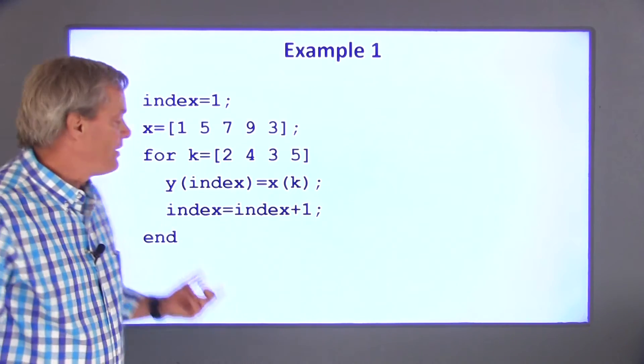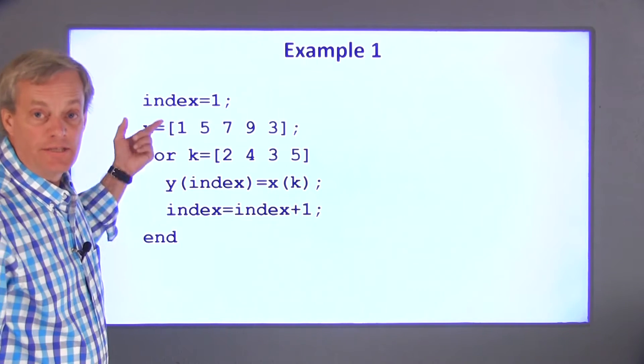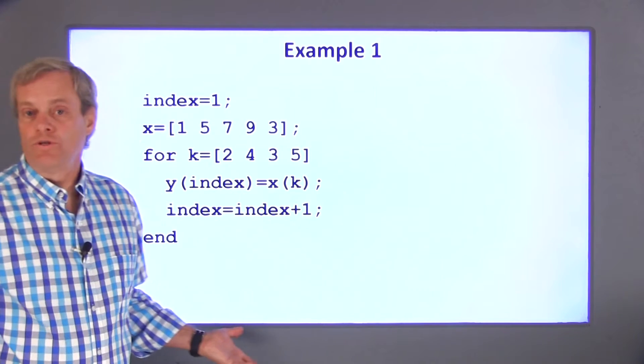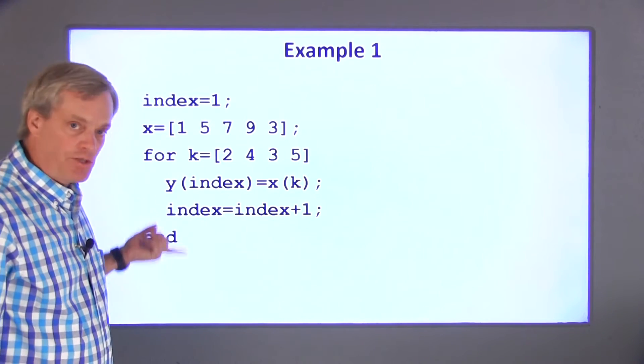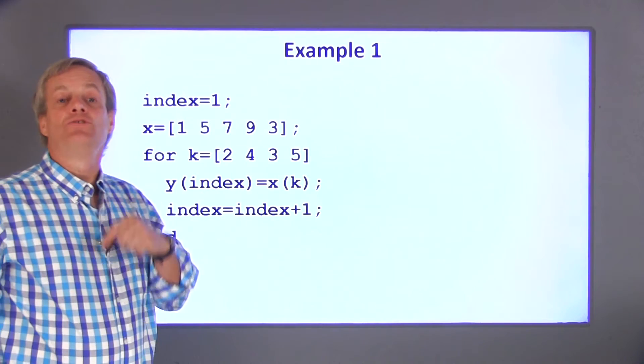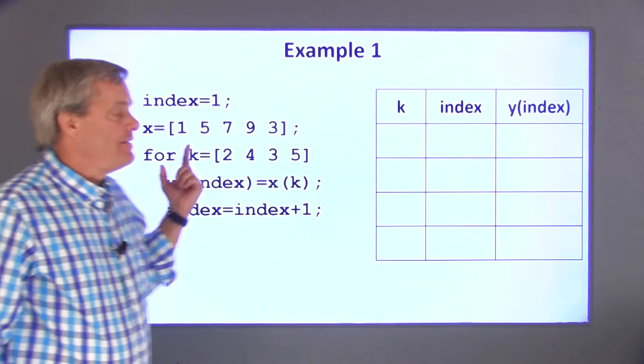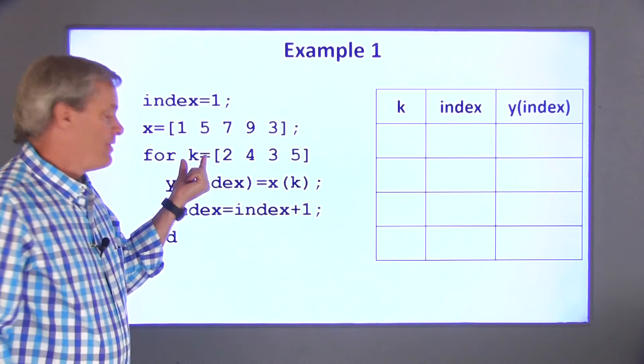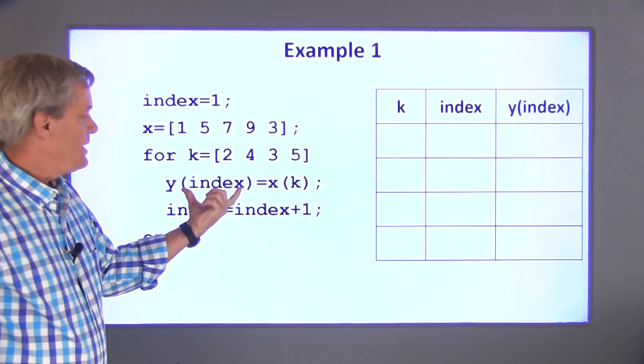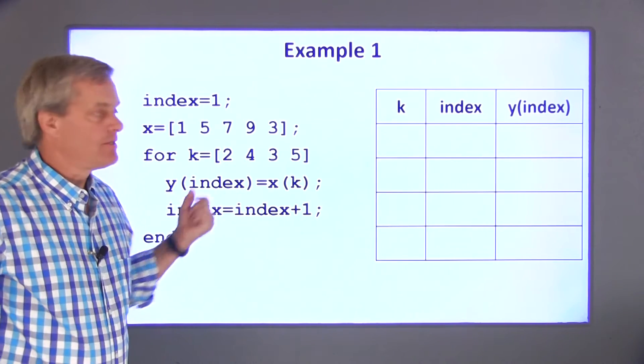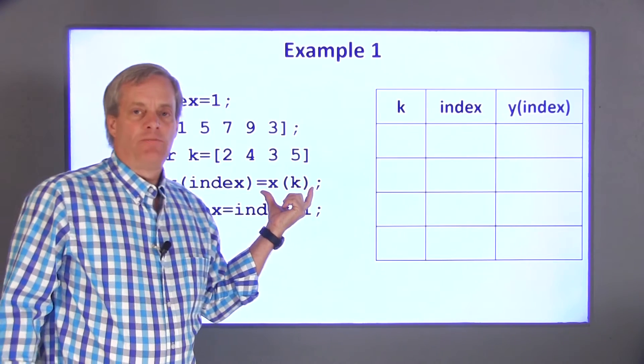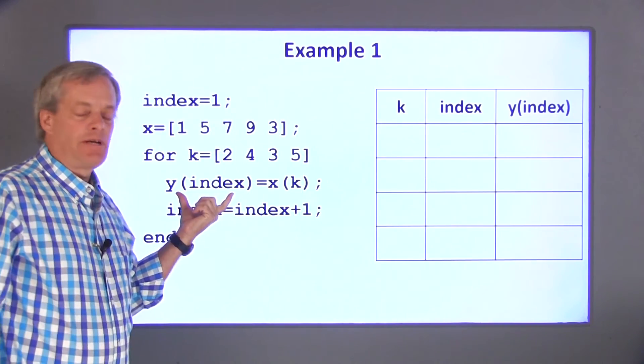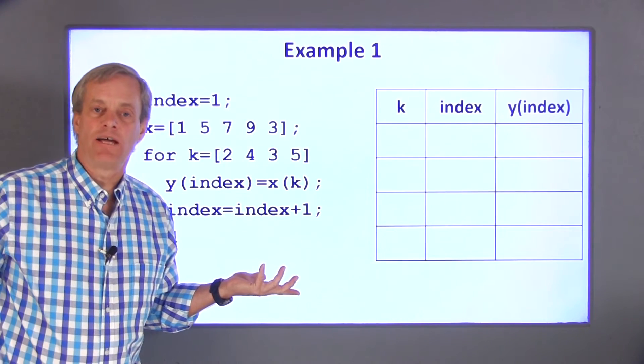In my first example, I want to determine what the variable y is as a result of this code. Probably the most reliable way to determine the result of a for loop is to create a table that gives the variables created by the loop as the looping structure progresses. In this particular case, there are probably three variables that we want to keep track of: the value for k, index, and y of index. There's also another variable x of k that I could potentially keep track of here, but since it's set directly equal to y of index, I think I don't need to keep track of it.